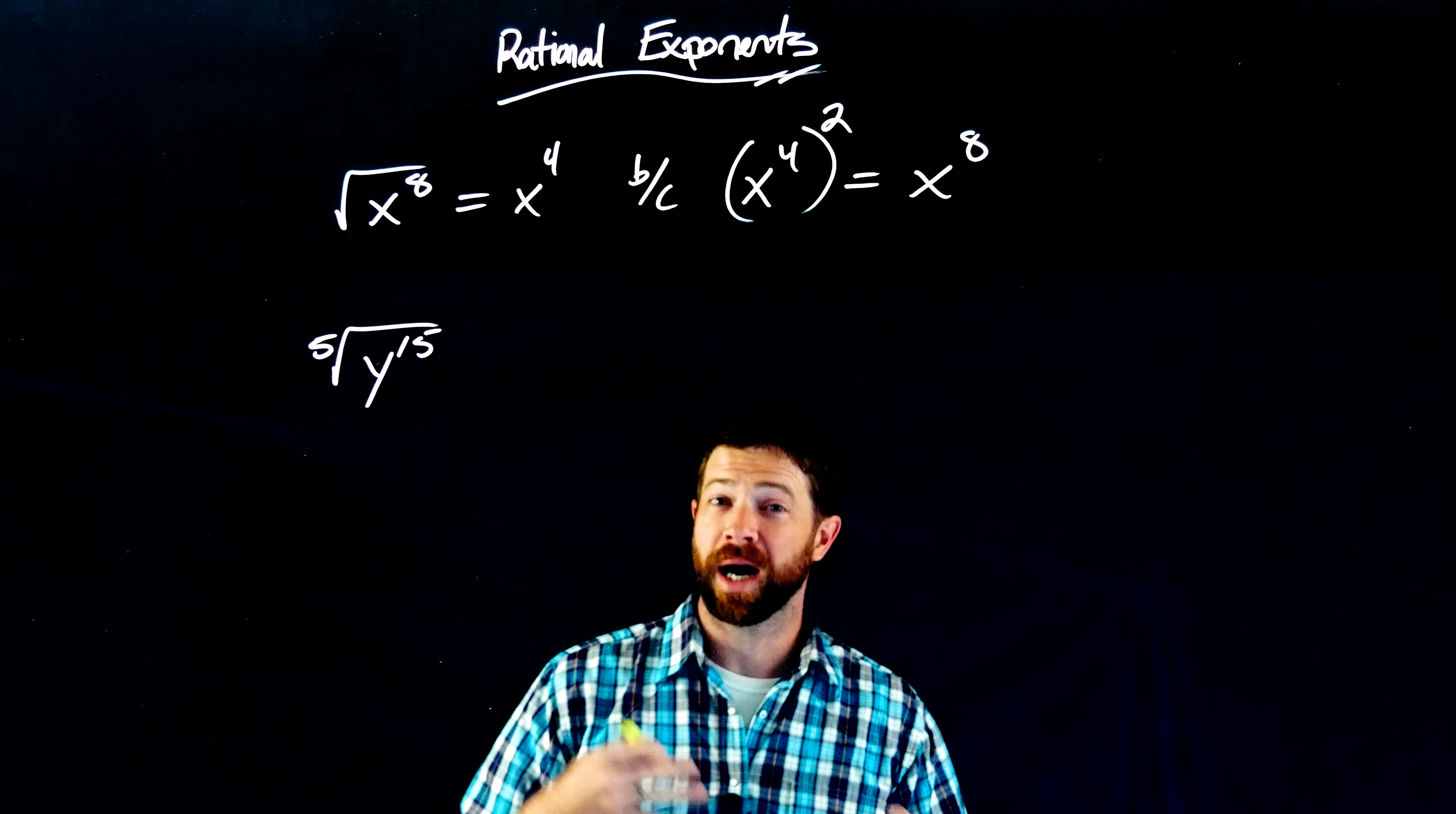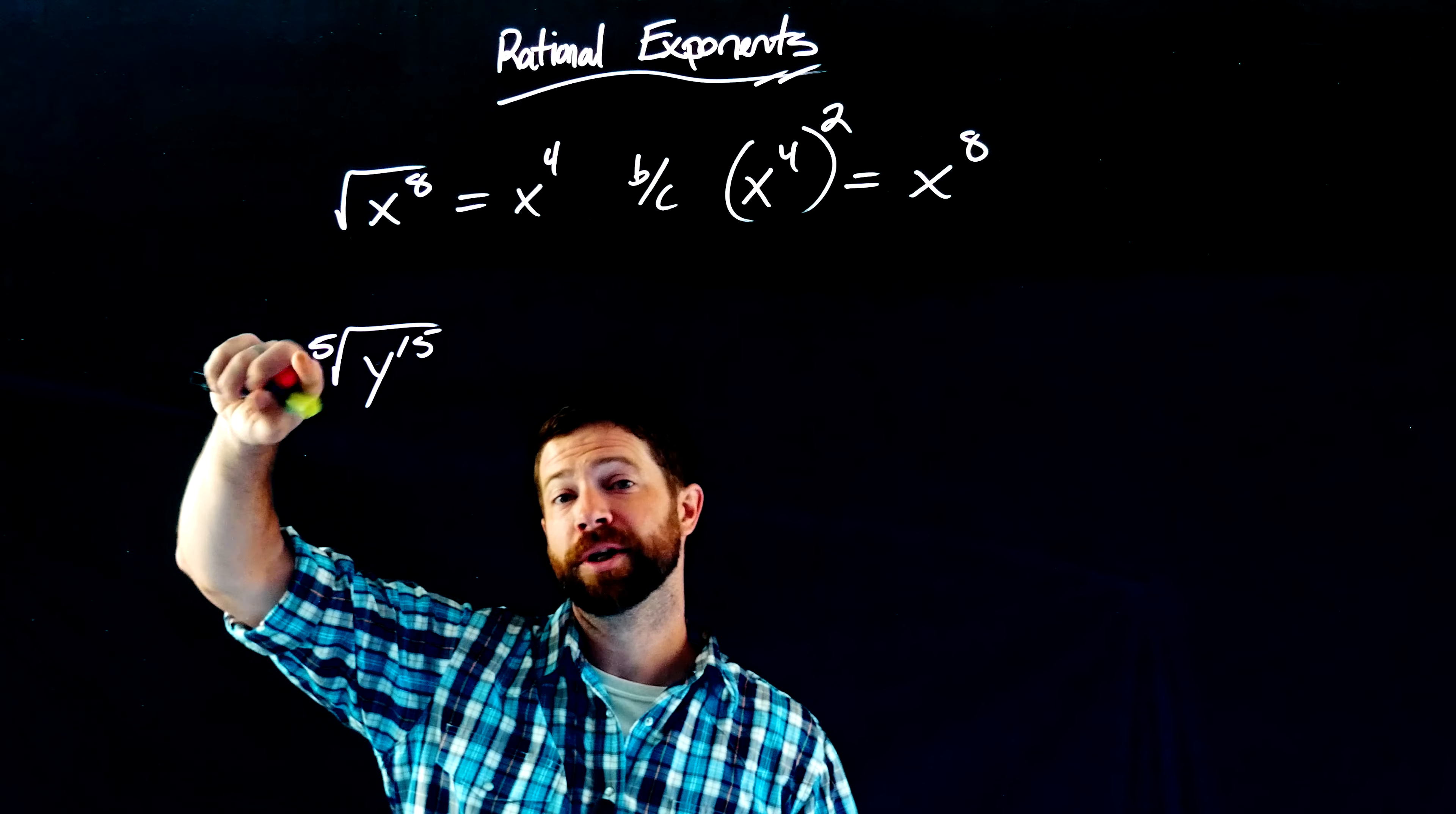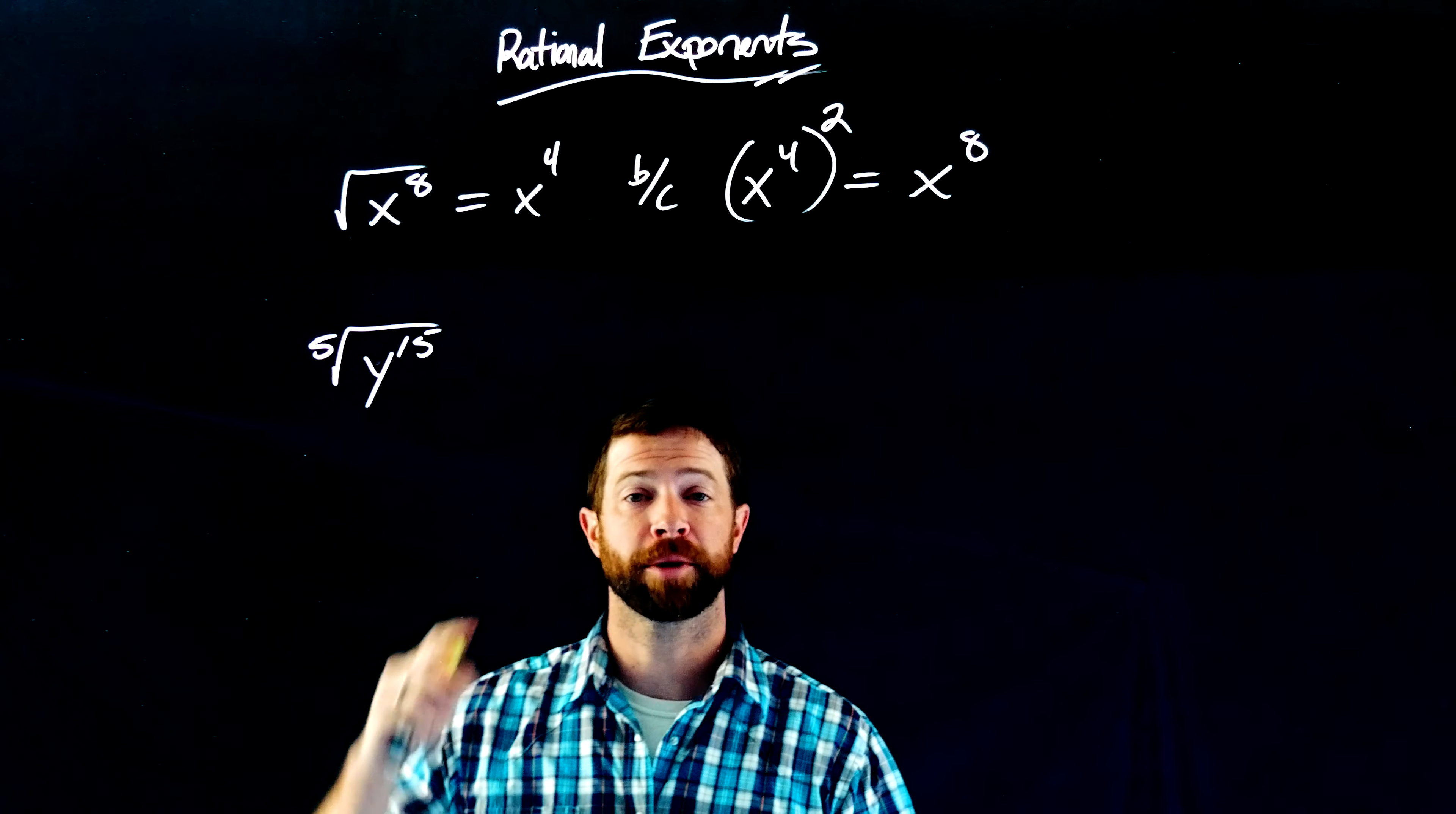And then we build it up into higher order radicals with different indices. This is an index five radical here, or a fifth root. In order to take the fifth root of this expression, we simply just divide the exponent by the index.